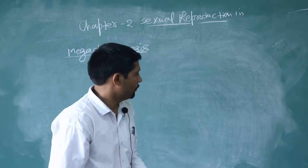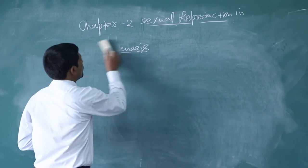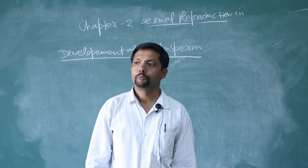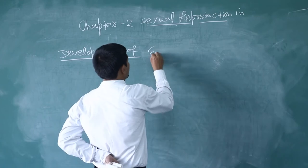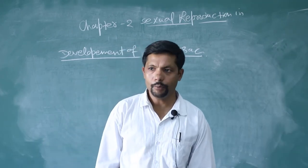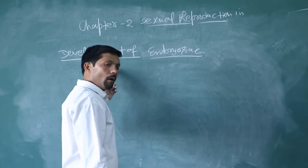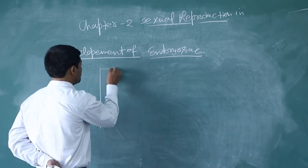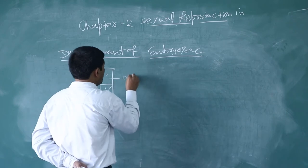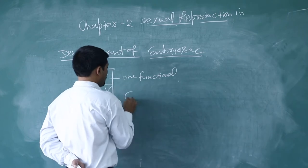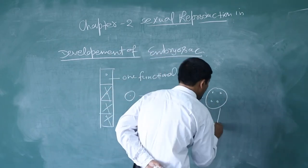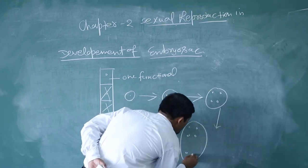After megasporogenesis, we come to the development of the embryo sac. The embryo sac represents the female gametophyte. Out of four megaspores, three get degenerated. One functional megaspore starts dividing — it produces two nuclei, then four nuclei, then eight nuclei. First karyokinesis takes place, which produces the eight-nucleate structure, and then cytokinesis takes place.